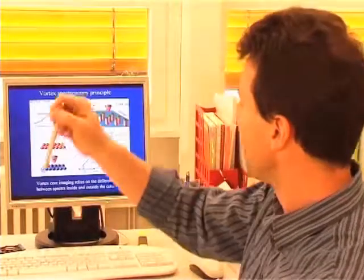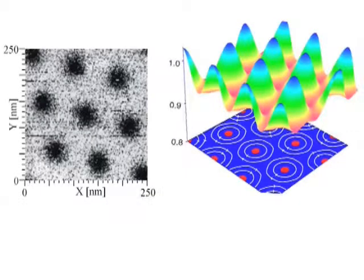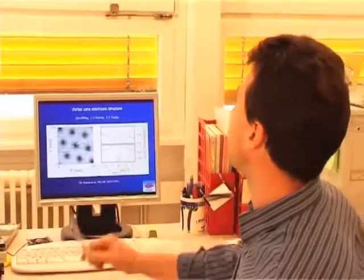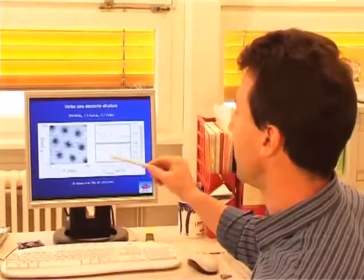If you plot the spectra as a function of position over the sample, you can get and map out the vortex lattice. This is the illustration of how the vortices can be probed in the superconductor with a scanning tunneling microscope.